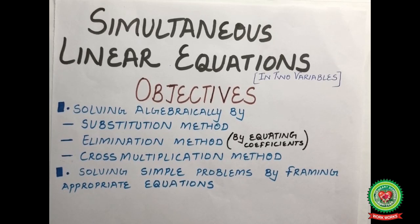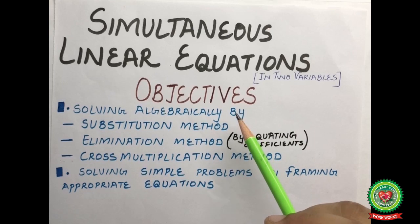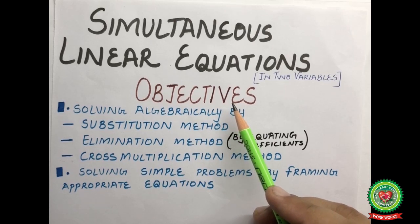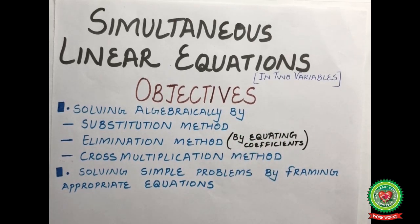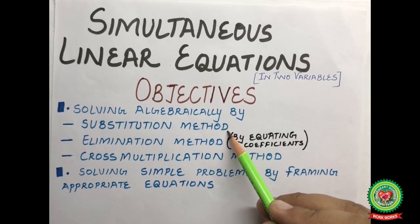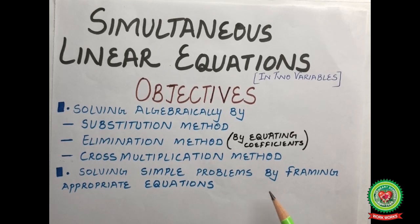Hello students, today we are going to start with the new topic: simultaneous linear equations in two variables. Before starting, let us go through the various objectives of this chapter. After completing this chapter, students will be able to solve linear equations in two variables by substitution method, elimination method, cross multiplication method, and will be able to solve simple problems by framing appropriate equations.